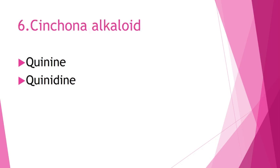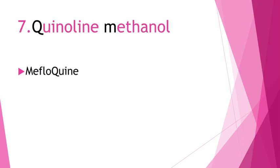Sixth is cinchona alkaloid. In this class we have quinine and quinidine. Quinine is obtained from the bark of the cinchona plant. Next is quinoline methanol — using the mnemonic QM, reversing it to MQ, that gives us mefloquine.